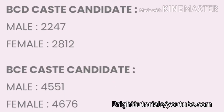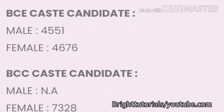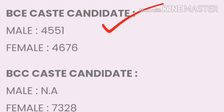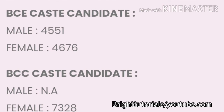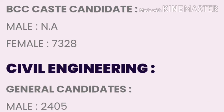For BCD caste in EEE: male cutoff is 2247 and female cutoff is 2812. For BCE caste: male cutoff is 4551 and female cutoff is 4676. For BCC caste: female cutoff is 7328.